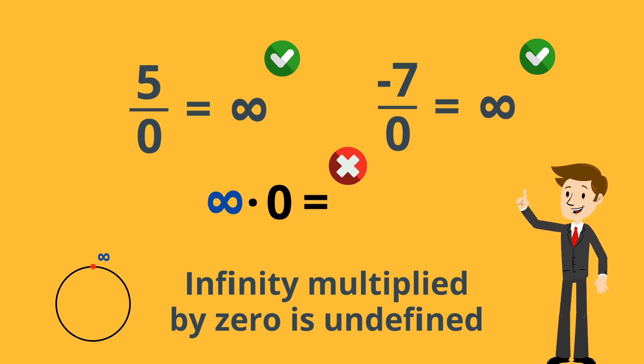But there is a system where it does work. A system where you can divide zero by zero, and more importantly, all the usual math rules fit perfectly. But I have to admit, it's not a very big space. In fact, it's downright tiny.